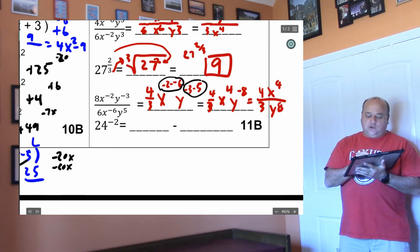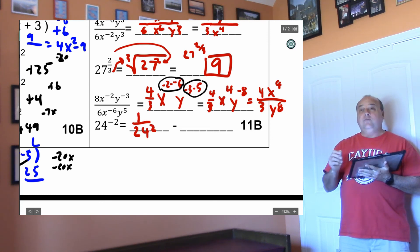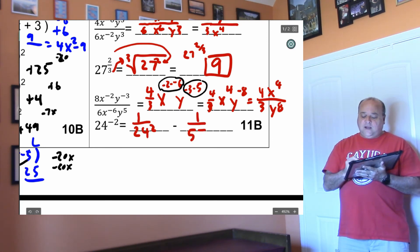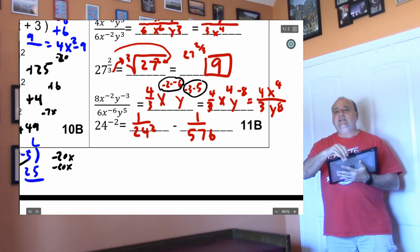And then lastly, 24 to the negative 2, this turns into 1 over 24 squared. And 24 times 24 is 576. So 1 over 576. Piece of cake.